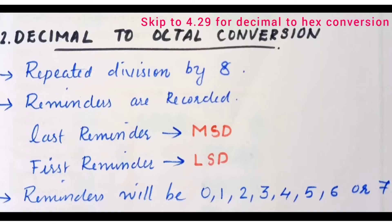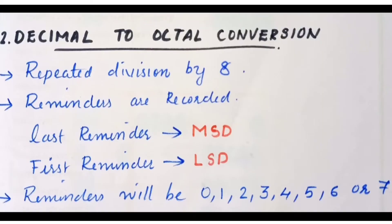This is called Number Conversion. In the previous class, we studied Decimal to Binary Conversion. In this class, we will study Decimal to Octal Conversion. Decimal is Base 10 and Octal is Base 8. We will study converting a Base 10 number to a Base 8 number.